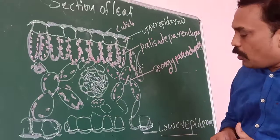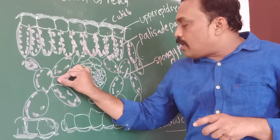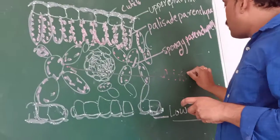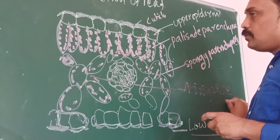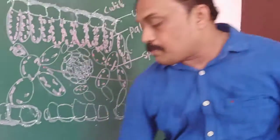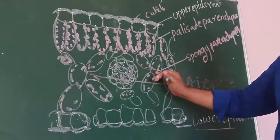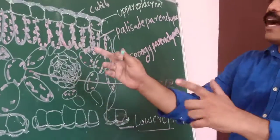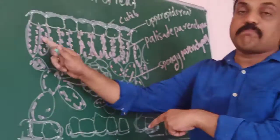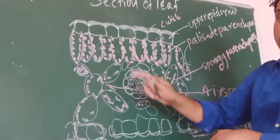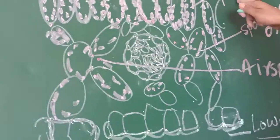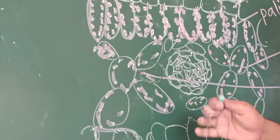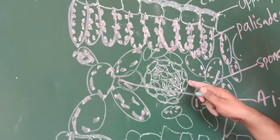If you observe the palisade parenchyma, we observe some air spaces. We observe a lot of air space between the spongy parenchyma cells. But we do not observe any gap or air spaces between the palisade parenchyma cells. In spongy parenchyma, there are a lot of gaps between the cells.